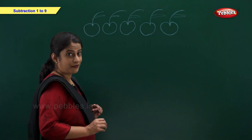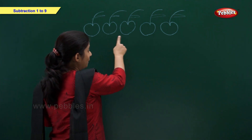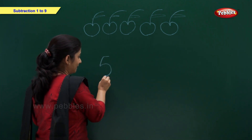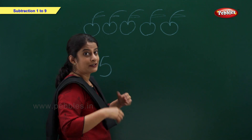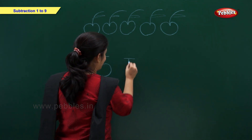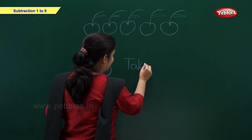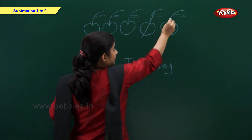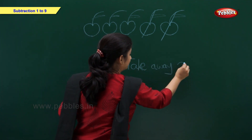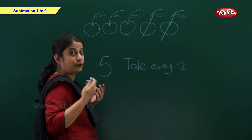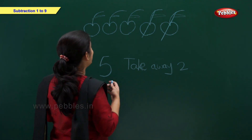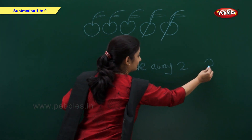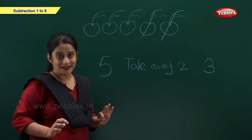I have 5 apples: 1, 2, 3, 4, 5. I gave 2 apples. So how many apples left with me? Let's count: 1, 2, 3. So friends, 3 apples left with me.